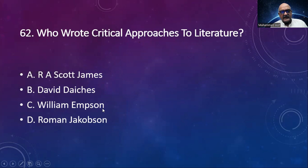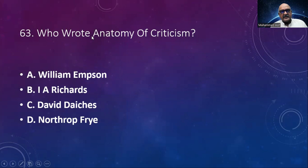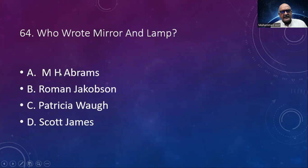Number 63: Who wrote Anatomy of Criticism? Options: William Empson, I.A. Richards, David Daiches, Northrop Frye. The answer is Northrop Frye. Number 64: Who wrote The Mirror and the Lamp? Options: M.H. Abrams, Roman Jakobson, Patricia Wall, Scott James. The answer is M.H. Abrams. This is considered one of the landmark books in literary criticism.